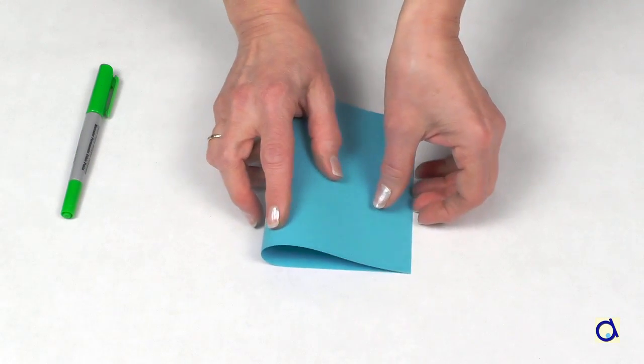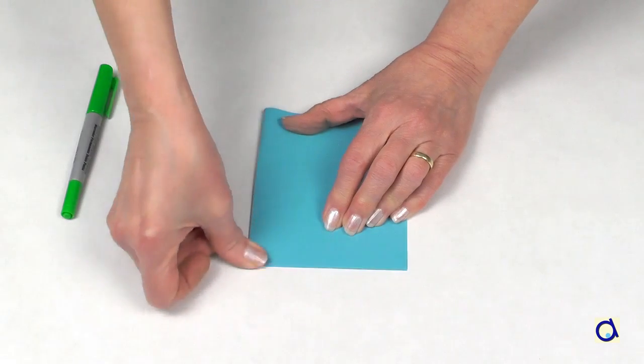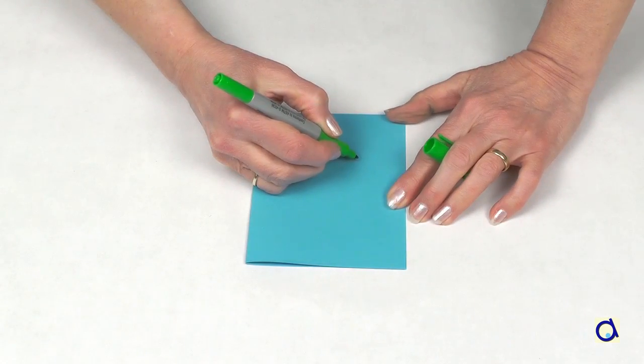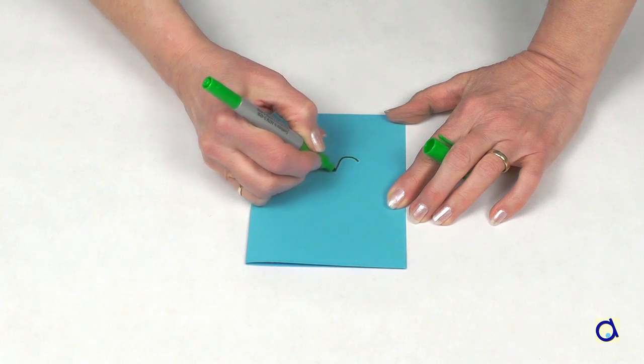Take half a sheet of blue construction paper and fold it in half to form a card. With a green felt-tip pen, draw the stem of the lily of the valley.